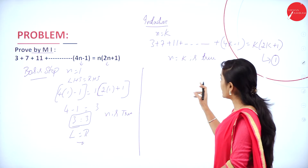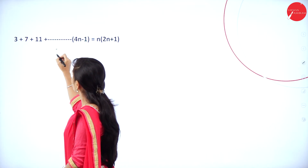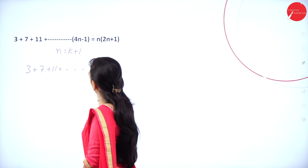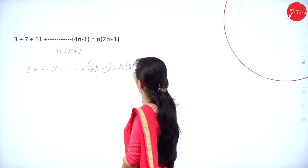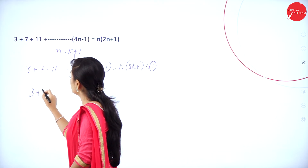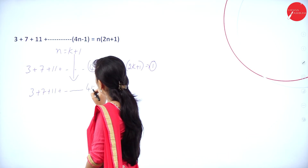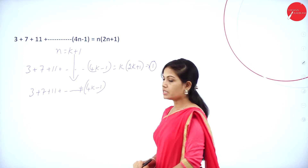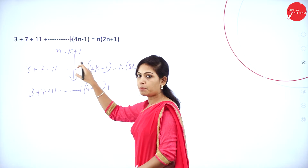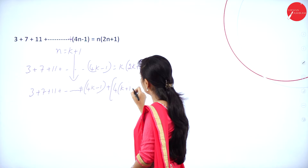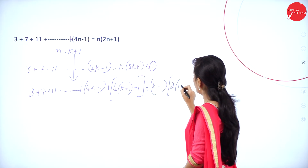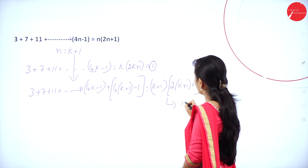Next, we have to prove that n equals k plus 1 is true. We take the LHS for n equals k plus 1: 3 plus 7 plus 11 plus (4k minus 1) plus the next term, where k is replaced by k plus 1, so 4 into (k plus 1) minus 1. The RHS becomes k plus 1 into 2 into (k plus 1) plus 1. This is equation number 2.